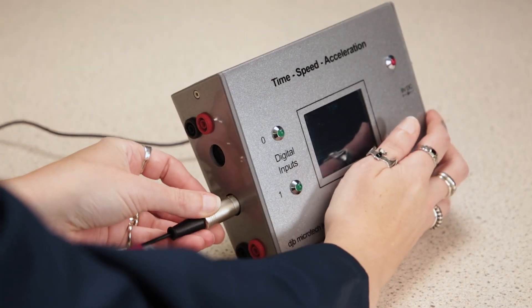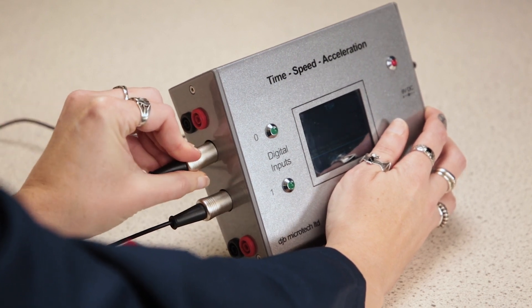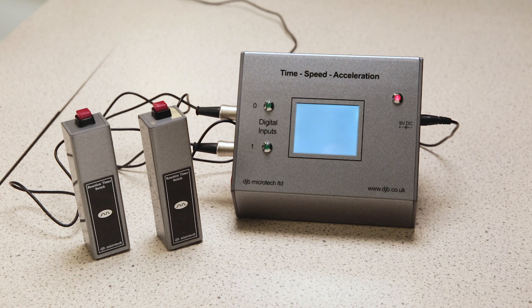Connect the two reaction time hand switches to the DIN sockets on the side of the TSA. Plug in the TSA to the main supply.